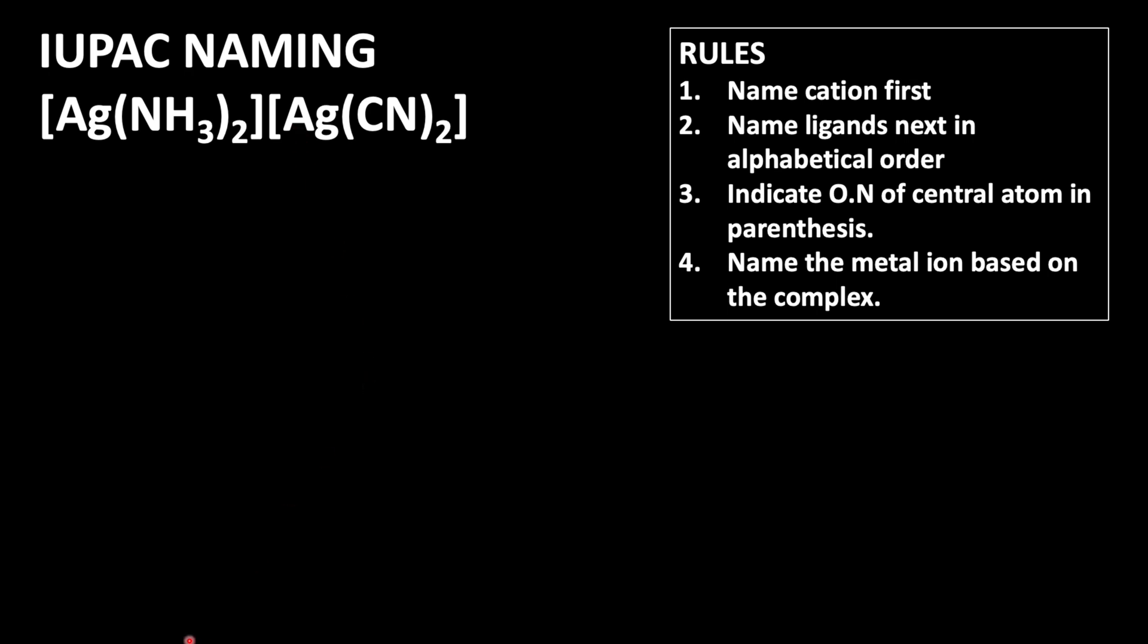Now we're going to first find out the oxidation state of the central ion. Let us keep silver as x. So x plus NH3 is a neutral ligand, so 0. 2 times 0. Again Ag is x. Then cyanide group carries minus 1 charge because it is an anionic ligand.